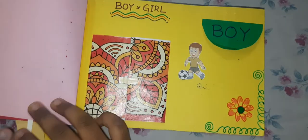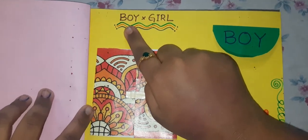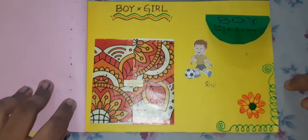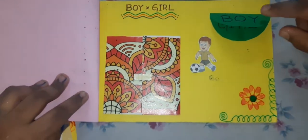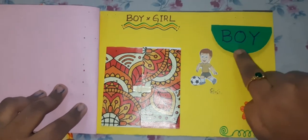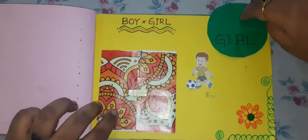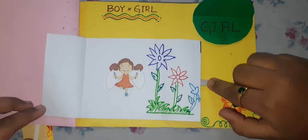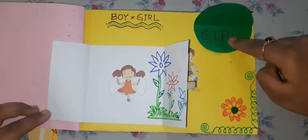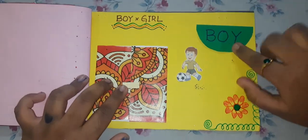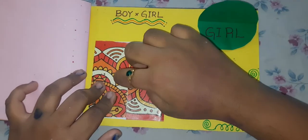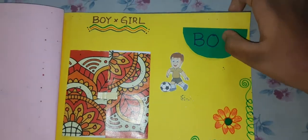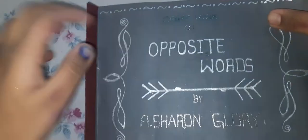Next one. Boy, opposite is girl. Girl, opposite is boy. Boy. Girl. Thank you.